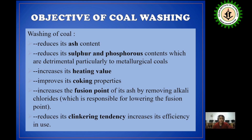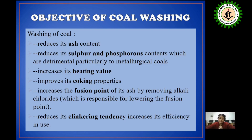What is the objective of this coal washing process? Carrying out this process reduces the ash content, reduces sulfur and phosphorus content, increases its heating value, improves its coking property, and increases the fusion point of its ash by removing alkali chloride, and reduces its clinkering tendency. So the main objective of coal washing is to reduce ash content, sulfur and phosphorus content, and increase the heating value.